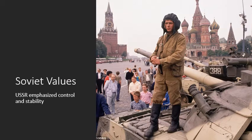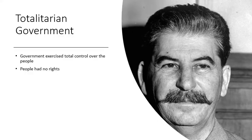Let's now take a minute to look at the Soviet values. The Soviet Union and the Communist regime, which ran it, had very different ideas of what life was supposed to be like. The USSR emphasized control and stability. The Soviet Union was a totalitarian government — the government exercised total control over the people. You have someone like Joseph Stalin at the top who has complete control over the country. The people have no rights. It is what Stalin says, and that trickles down through the party. The party controls everything.